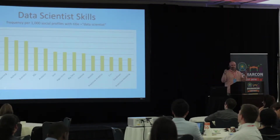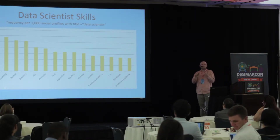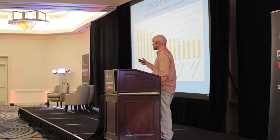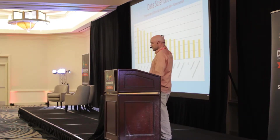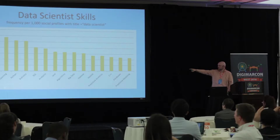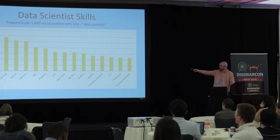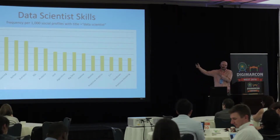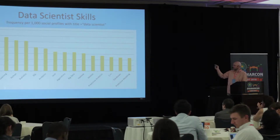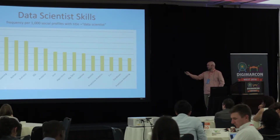We took the data in our database and thought, what if we use a little bit of pseudo data science to mine our data and try to determine what skill sets a data scientist actually possesses? Looking at frequency per 1,000 social profiles with 'data scientist' as a title — about 50,000 profiles — the most common skills were: data mining, data analysis, machine learning, Python, statistics, SQL, analytics, and Java. This confirms that the data scientist is that combination of statistics, mathematics, analysis, and software engineering.